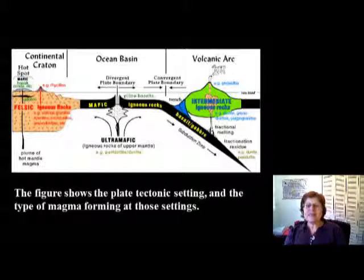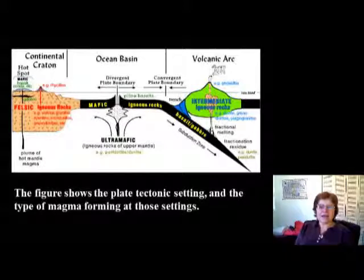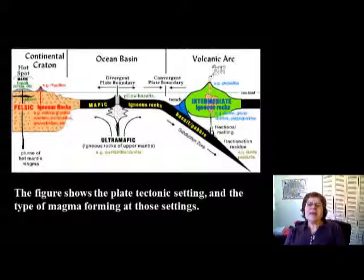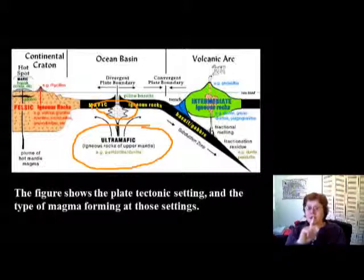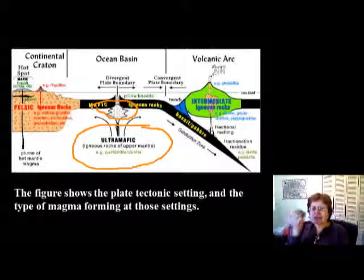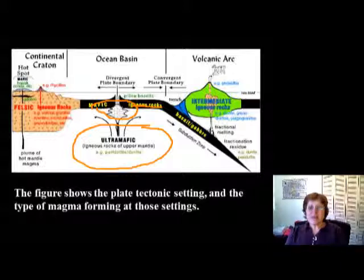This slide shows the global plate tectonic setting. When you have a mantle composition that is ultra-mafic, when the ultra-mafic mantle partially melts it will actually produce mafic magma. So everything along mid-oceanic ridges at divergent plate boundaries is going to be mafic — the oceanic crust is always going to be mafic.